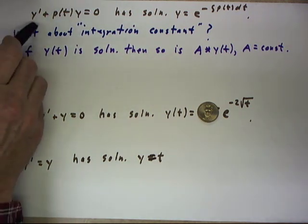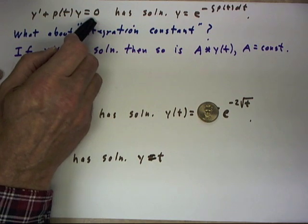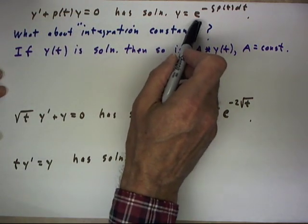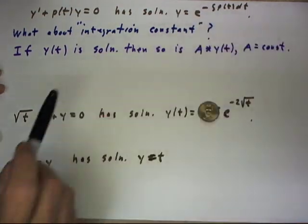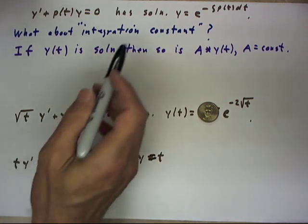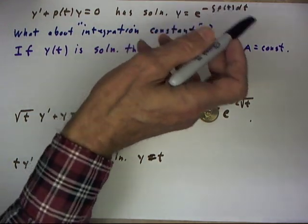Now the equation y' + p(t)y = 0 does have solution y = e^(-∫p(t)dt). However, you notice that there's no integration constant.